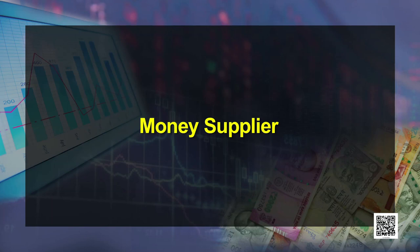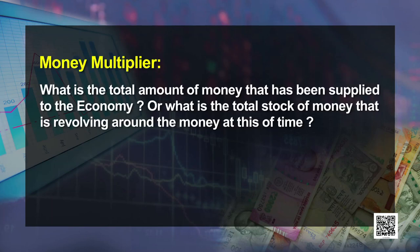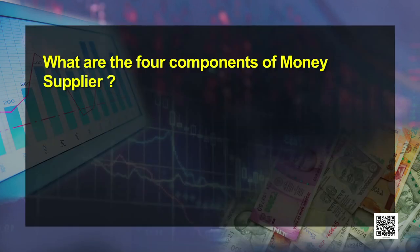Now let's talk about money supply. Money supply refers to the total amount of money supplied into the economy, or the total stock of money revolving in the economy at a given point of time. In 1979, the government issued directives to RBI asking about total money circulation. The RBI came up with four components of money supply: M1, M2, M3, and M4.